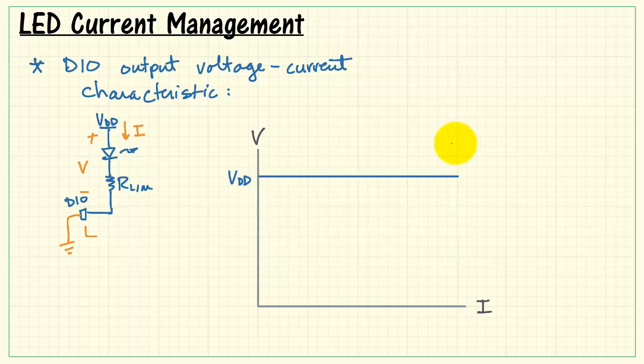When the DIO is low, that means the voltage V is simply VDD. And for an ideal output, it would be constant no matter the current that's being demanded by the LED and the current limiting resistor. So that's the ideal behavior. Constant output, voltage regardless of current.